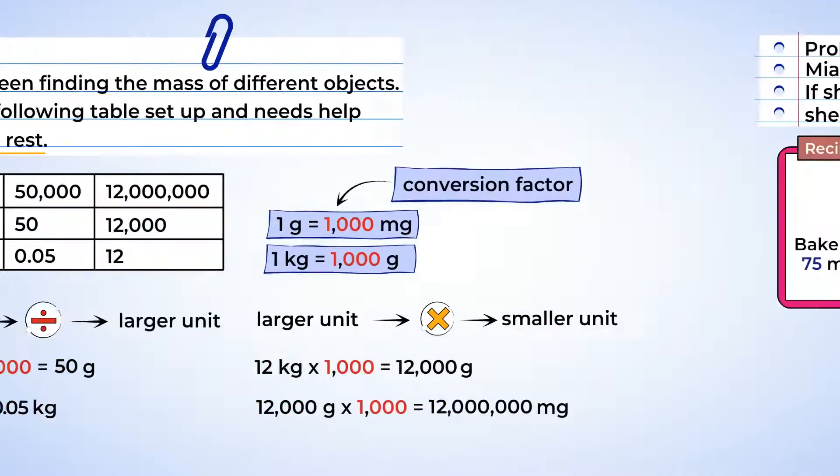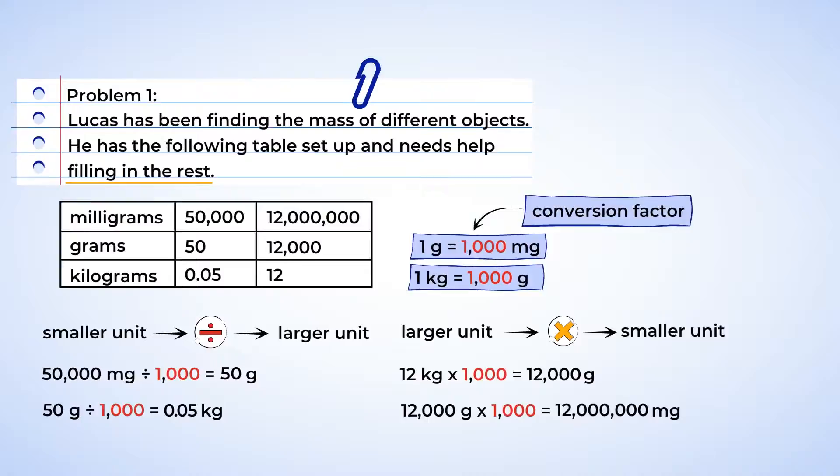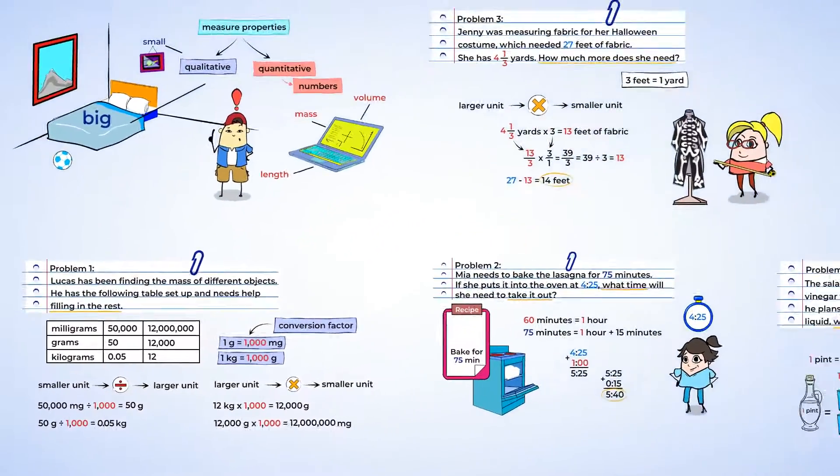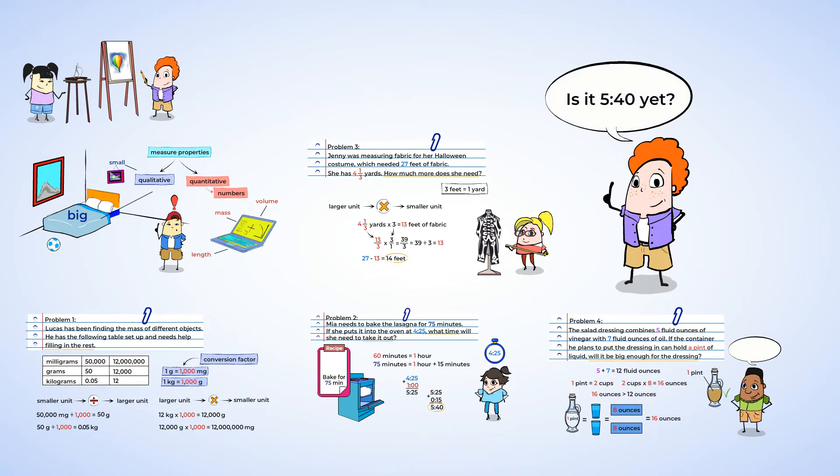We did some great work converting units of measure. We were able to convert smaller units into bigger units by using division. Conversely, we converted larger units into smaller units by multiplying. All these mighty math conversions have made me hungry. And now, it's time to check on that lasagna. Is it 5:40 yet? What do you say we hop on over to the next video lesson?